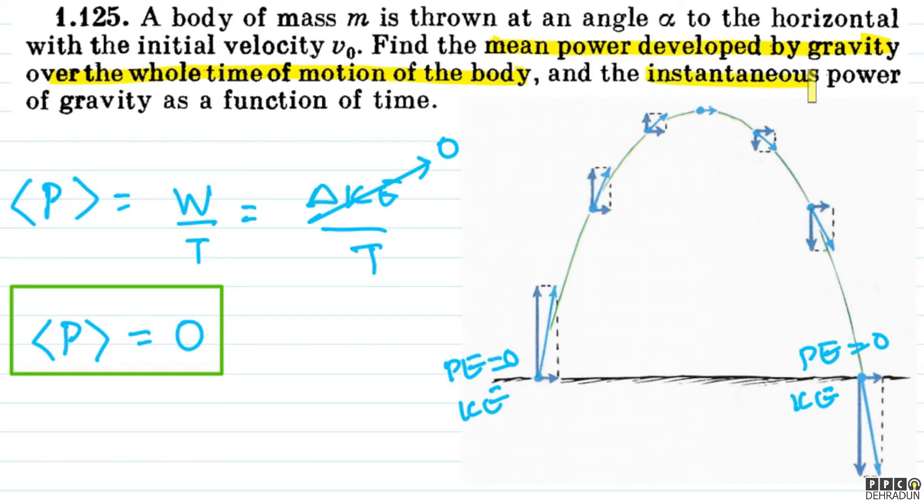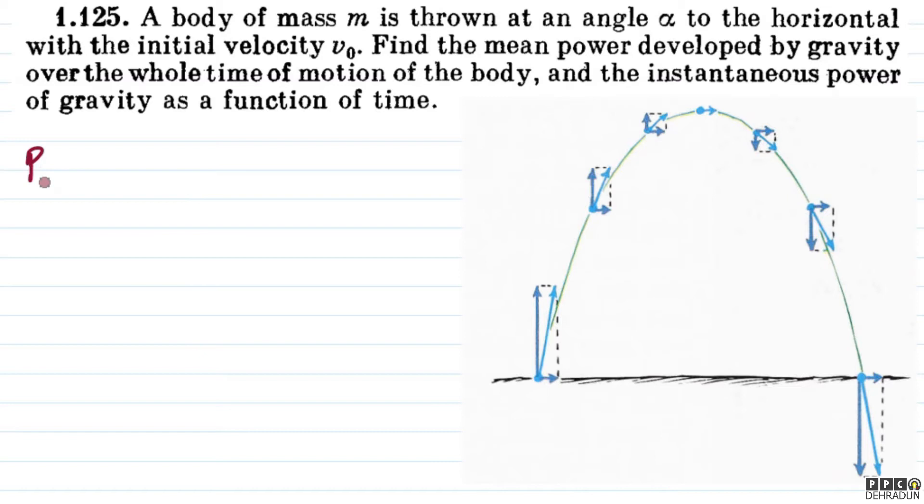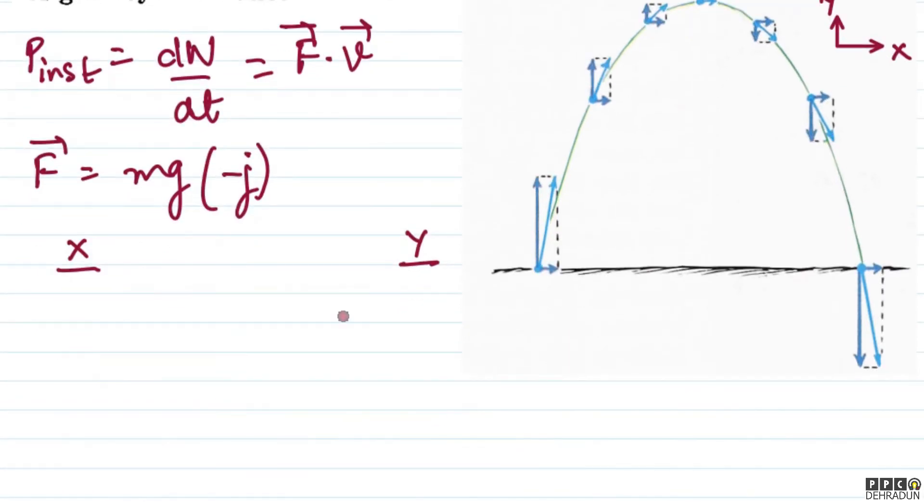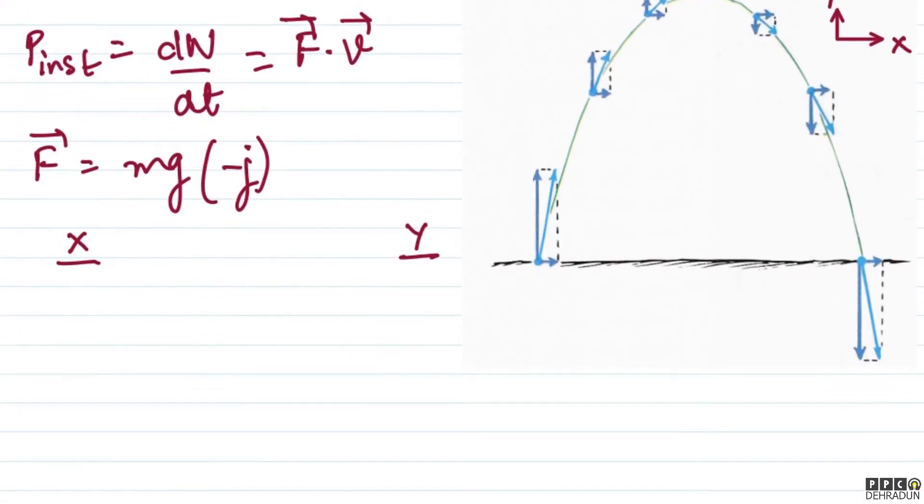Now we look at the second part. We need the instantaneous power of gravity as a function of time. For instantaneous power, what we need is dW by dt, the rate of doing work, which is the force vector dot velocity vector. Now we know that force is in the downward direction. So as a function of x and y, how do we look at it? We look at the initial speed v-naught at angle alpha with the horizontal.